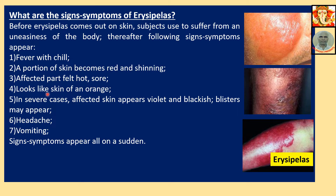The affected skin looks like the skin of an orange. In severe cases, affected skin appears violet or blackish, or blisters may appear. Headache, vomiting, and a total diseased state — signs and symptoms appear all of a sudden.